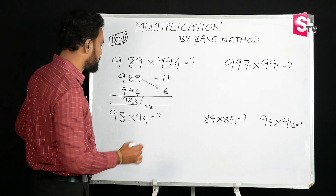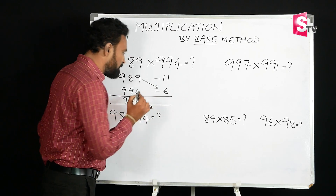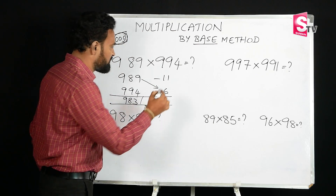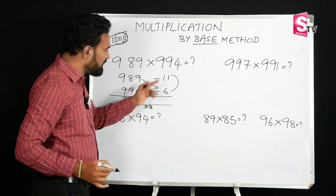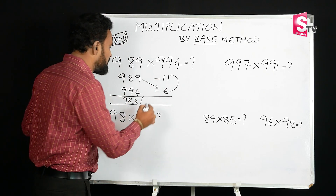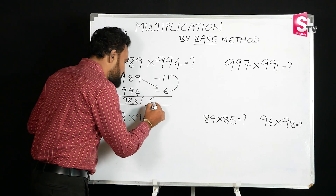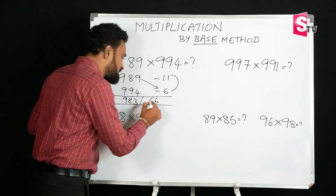That gives us the first part of the answer through cross subtraction: 989 minus 6 is 983. The second part: 11 times 6 equals 66.